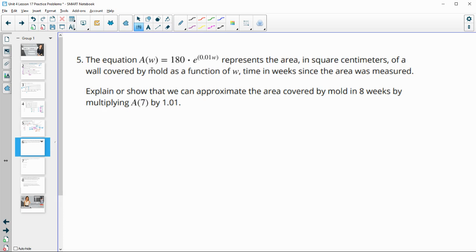Number five, equation A of W is represented by this, and it represents the area in square centimeters of a wall covered by mold as a function of W, which is weeks since it was measured. Explain how we can approximate the area of mold in eight weeks by multiplying A of seven, so taking the seven-week number, and multiplying it by 1.01.